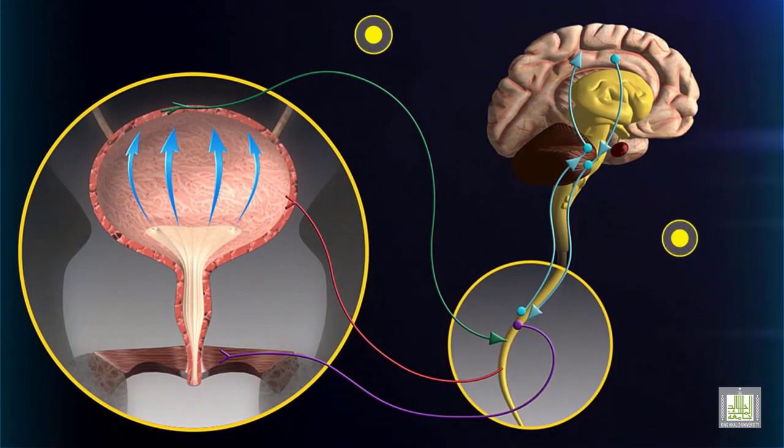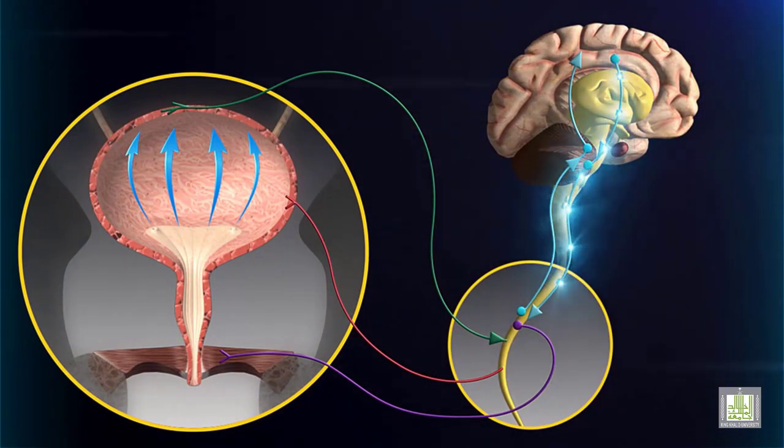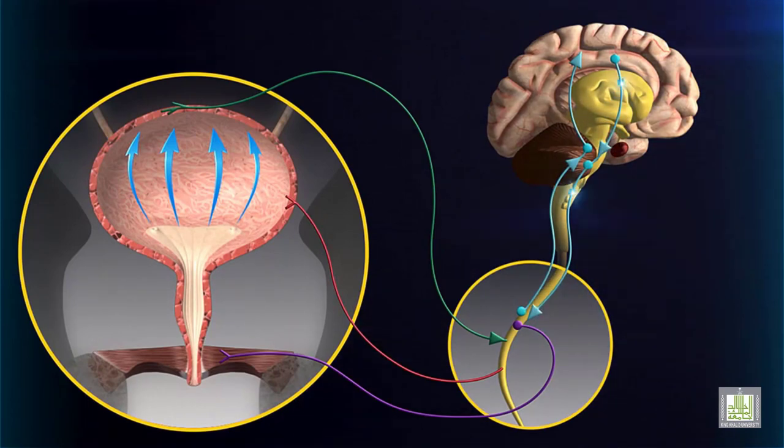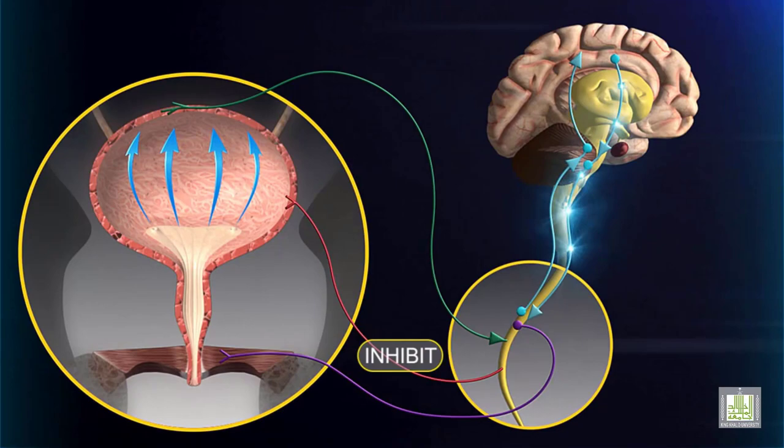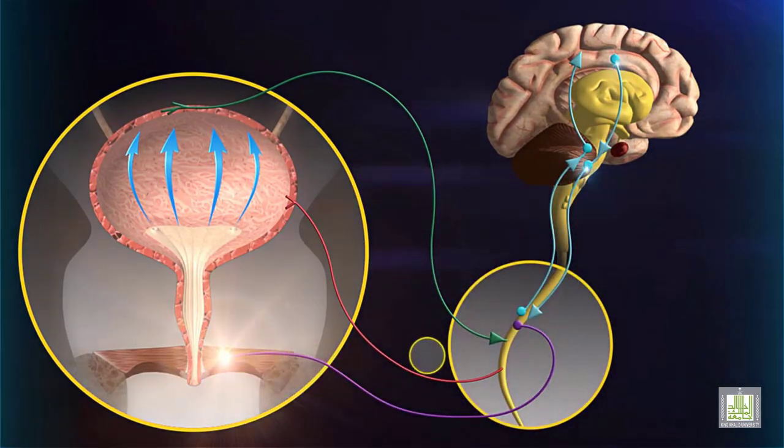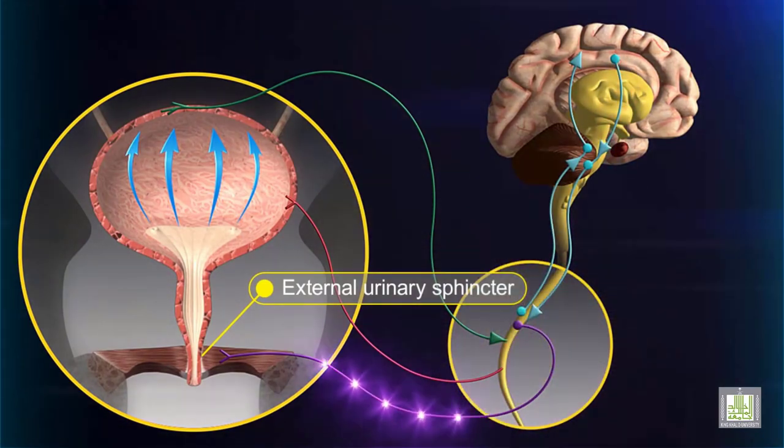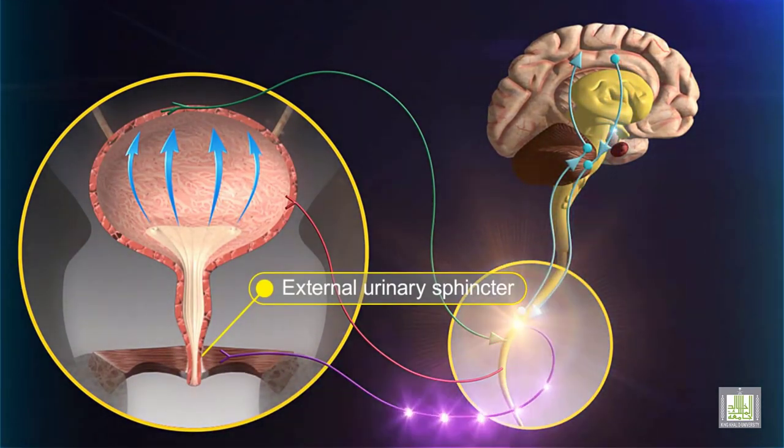If urination is not convenient at the time, the brain sends impulses down the spinal cord to inhibit the micturition reflex. Impulses carried via somatic motor neurons keep the external urinary sphincter contracted, which also prevents urination.